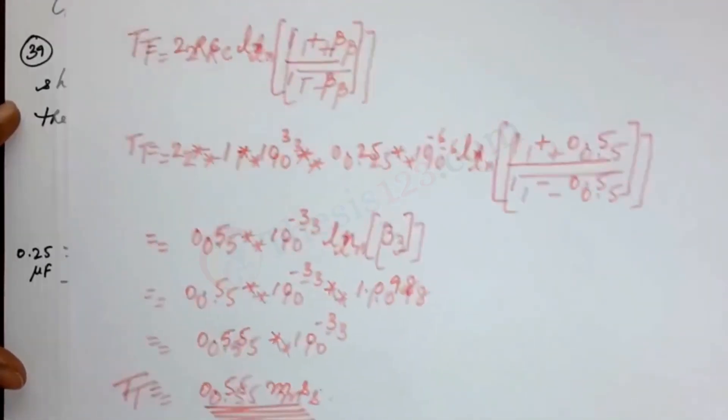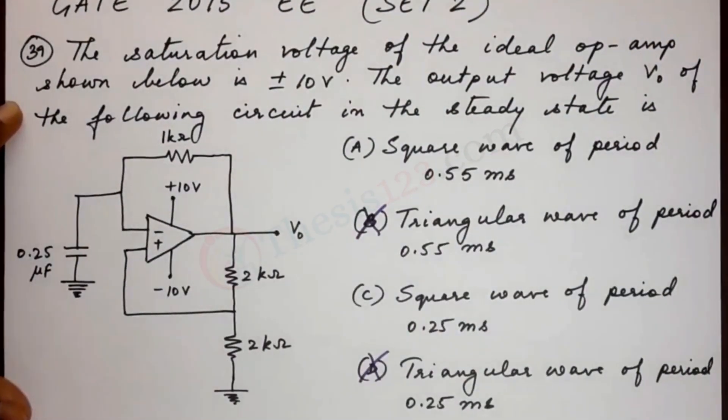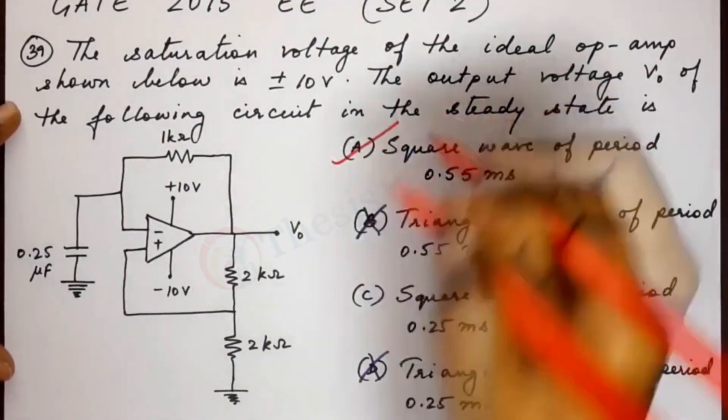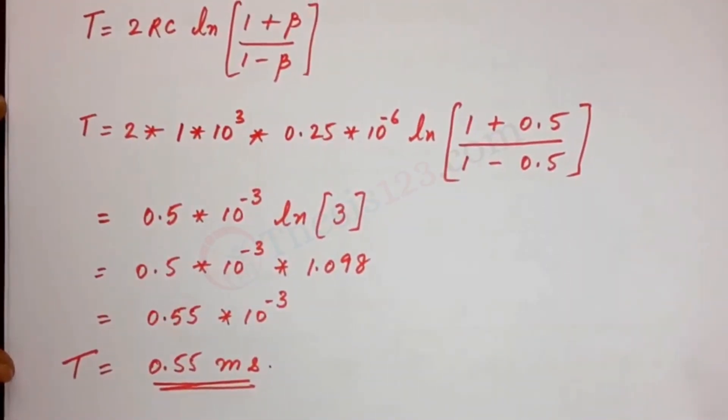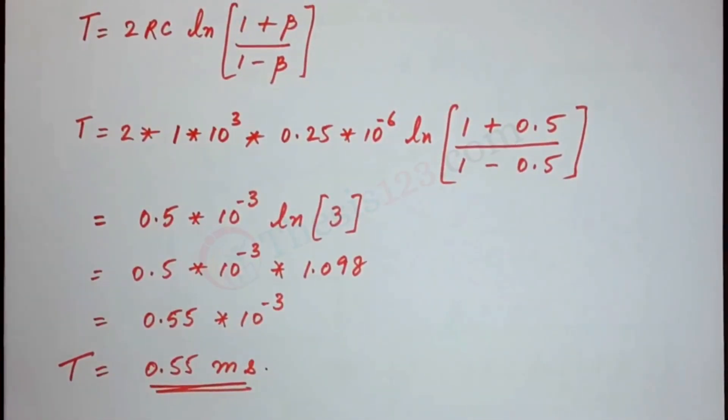So this is our solution. It's a square wave of period 0.55 millisecond. Well, I hope this explanation has helped.